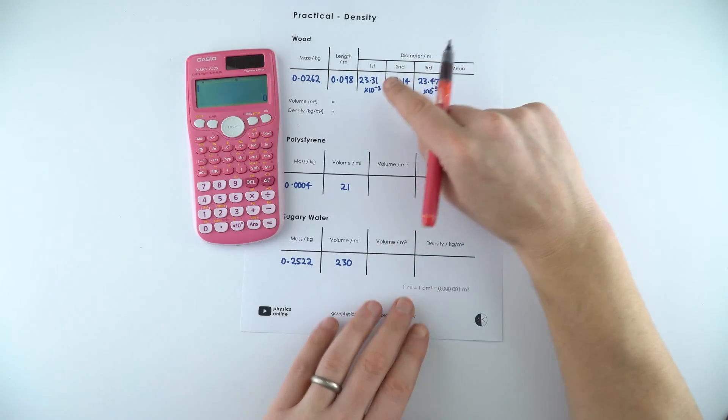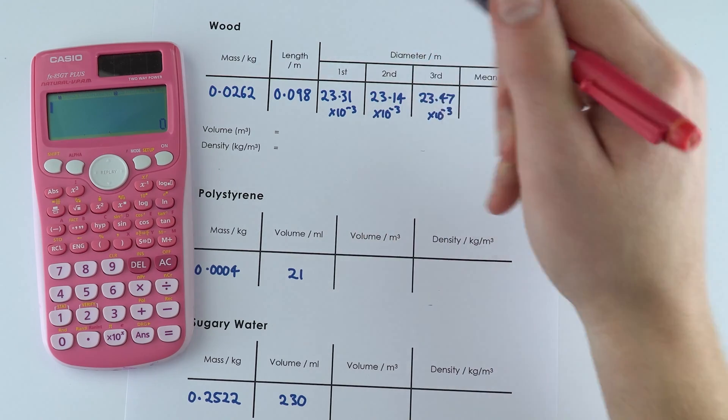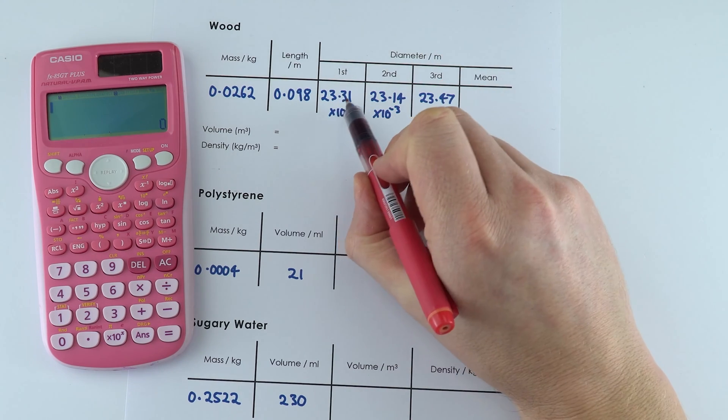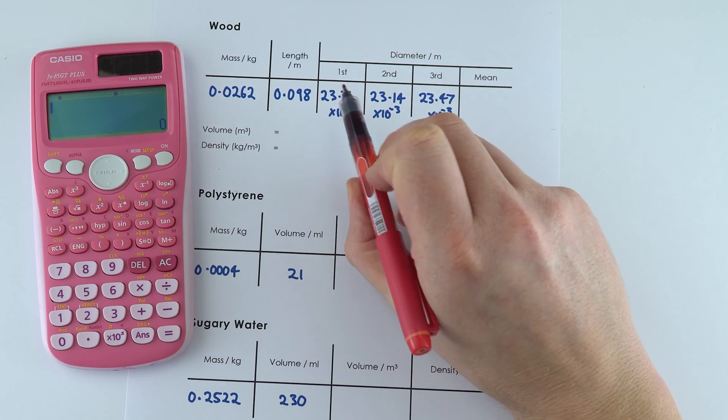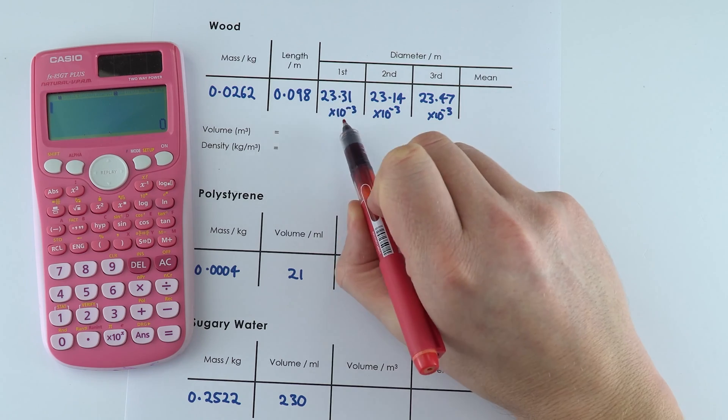So the first thing we're going to do is look at the average value for the diameters. Here I've got my values I recorded from that last video and all of them are times 10 to the minus 3 because we're going from millimeters to meters.